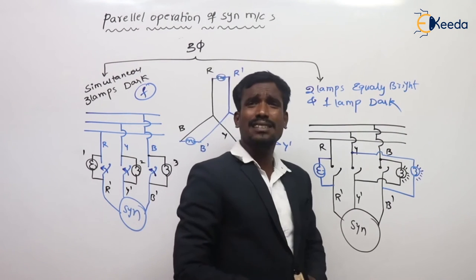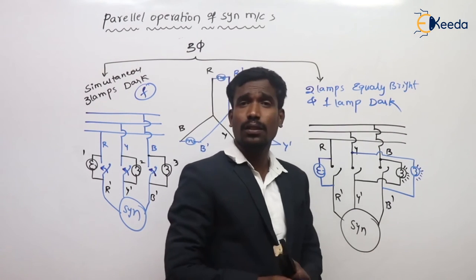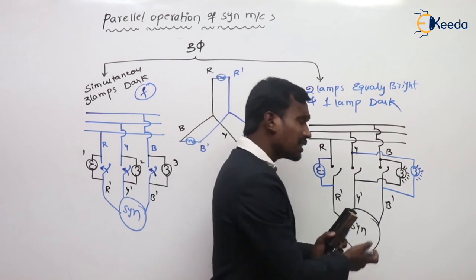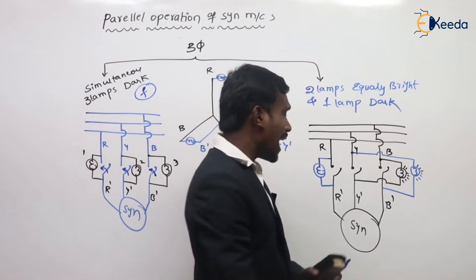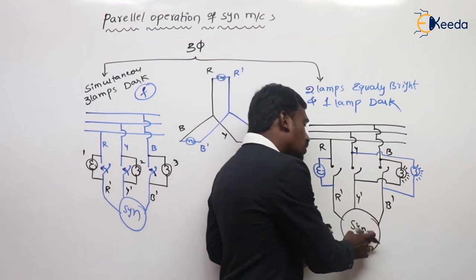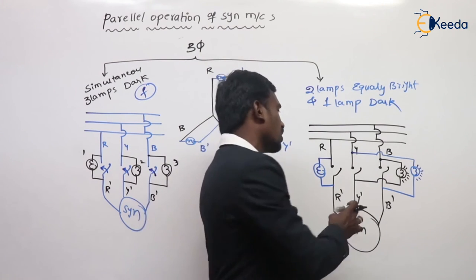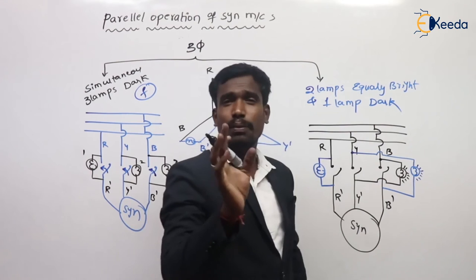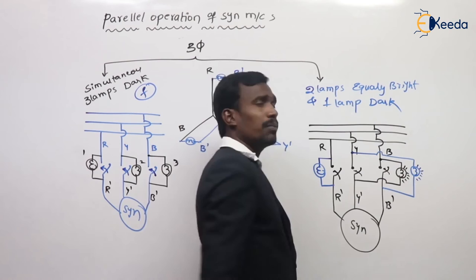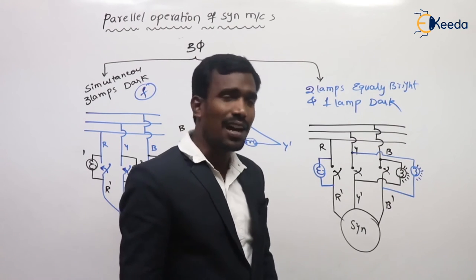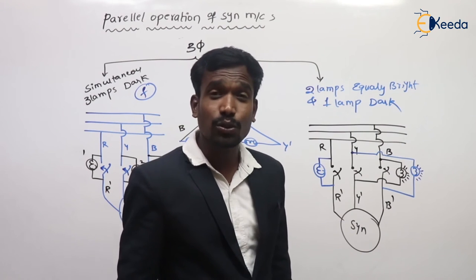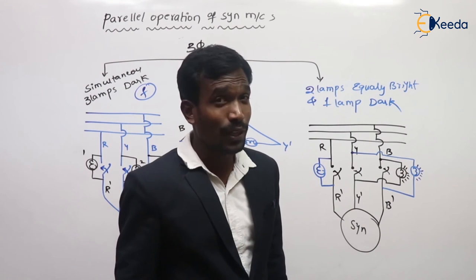If the phase sequence is not same, we have to make it same. If the frequency is not matched, we have to change the speed of our synchronous machine. By changing the speed, or by changing the excitation, the two frequencies should be matched. When the frequency is matched, the two lamps give bright and one lamp gives dark — then we close the switch.